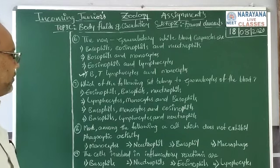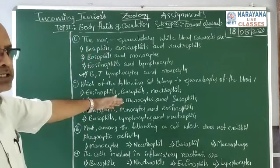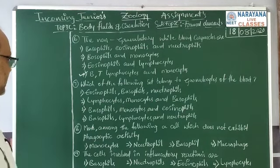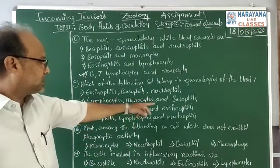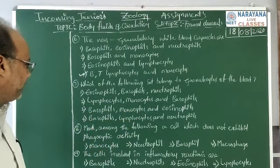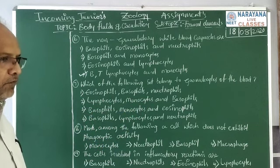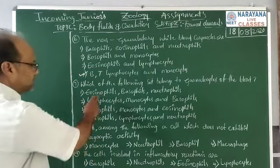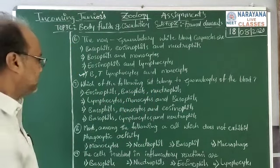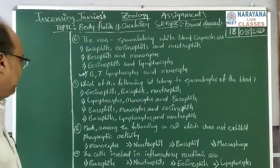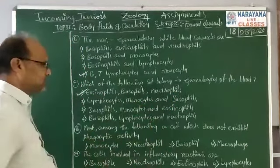Next question: which of the following set belongs to granulocytes of the blood? The cells having granular cytoplasm. The choices are: number one, eosinophils, basophils, neutrophils; number two, lymphocytes, monocytes and basophils; number three, basophils, monocytes and eosinophils; number four, basophils, lymphocytes and neutrophils. Eosinophils, basophils, and neutrophils are granulocytes — set number one is a complete representation of granulocytes of the blood. The correct option is option number one.